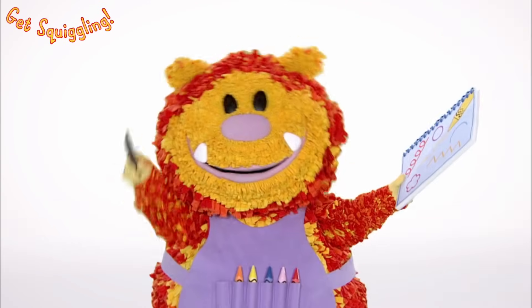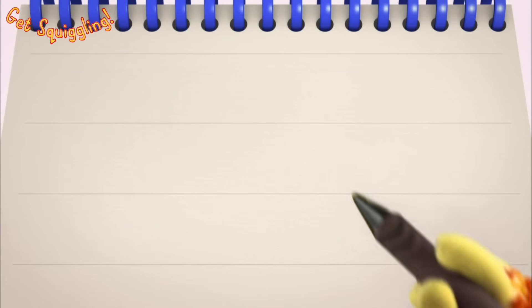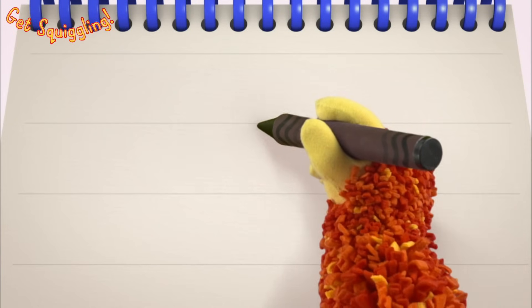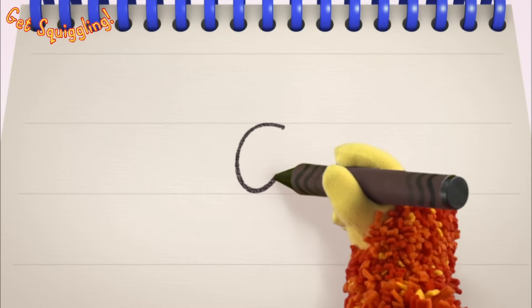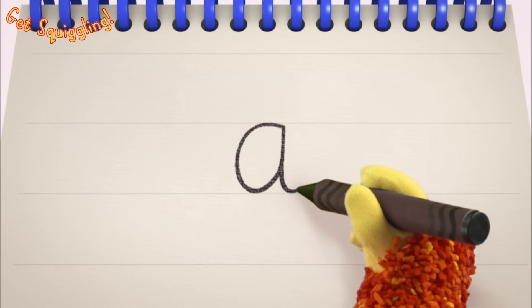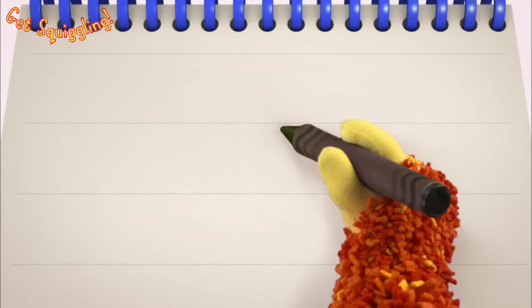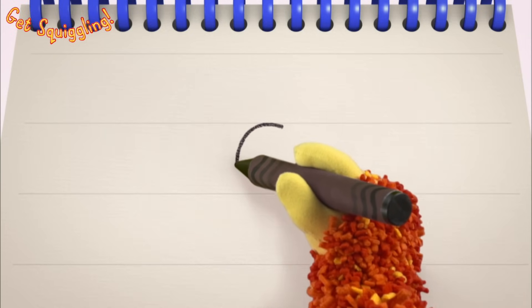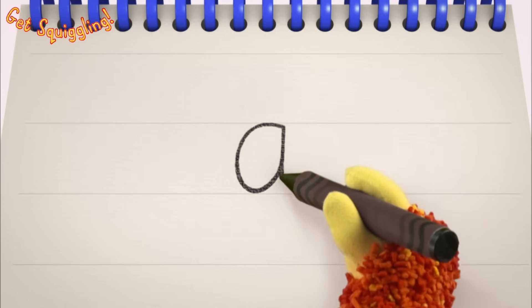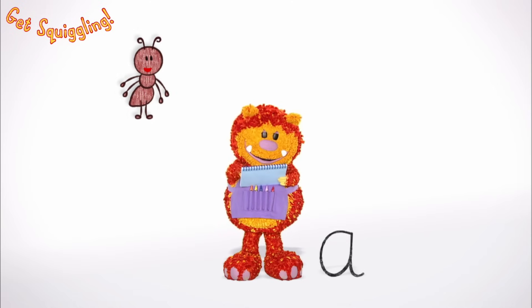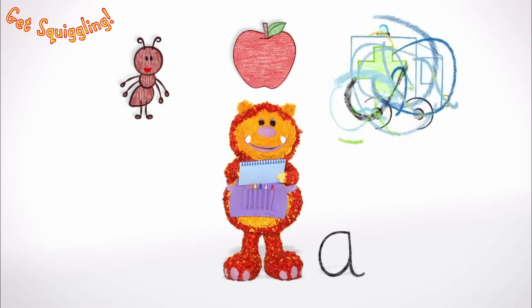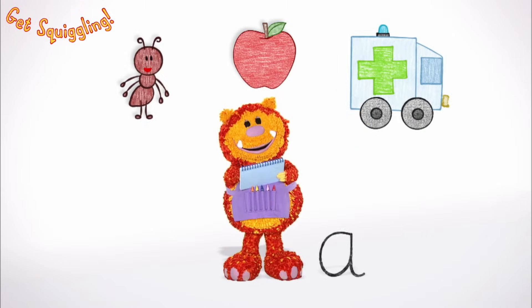Have you got your squiggle pads and squiggle sticks ready? Let's get squiggling! Holding your squiggle stick like this, move it round, up, down and flick — the letter A! Let's squiggle it again: go round, up, down and flick — the letter A! Shall we squiggle some things that start with the letter A? An ant, an apple and an ambulance — they all begin with the letter A!